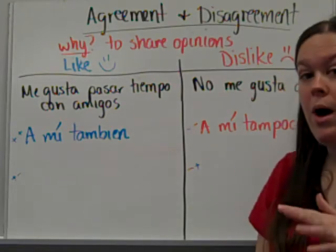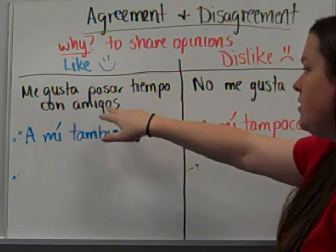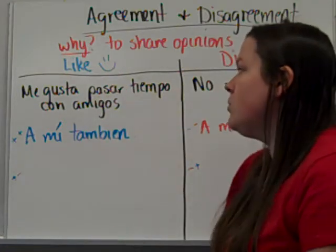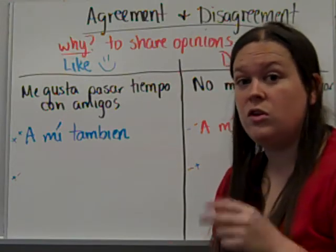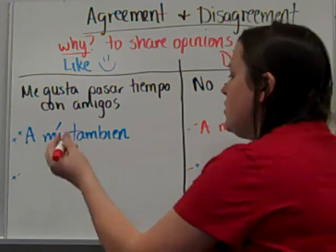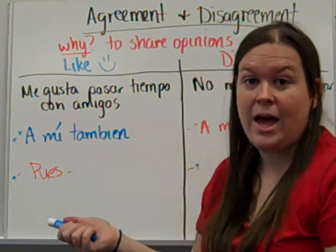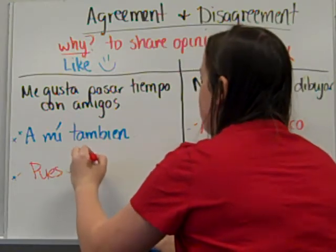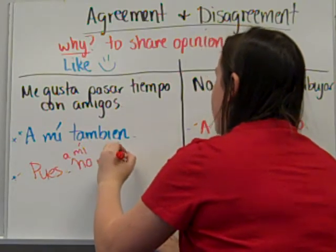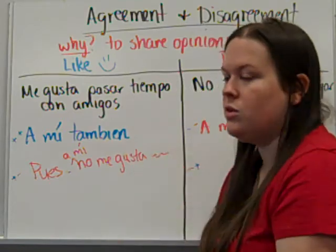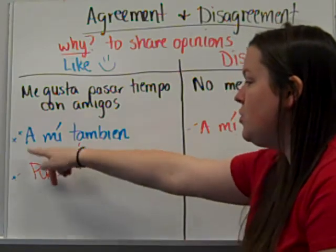Now, just quickly, so you know how to respond in the other way. So 'I like to spend time with friends,' and then you would respond that you don't like to spend time with friends. Now this is not a question, you're just stating it, so you don't need two 'no's — you just need one. So maybe you'll say 'pues' — that would be a good word to add to your notes, by the way — 'a mí no me gusta pasar tiempo con amigos.' So, well, I don't really like that. So that's a positive statement, but you disagree.